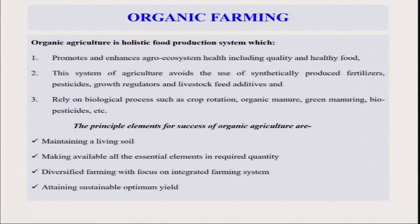Organic farming promotes enhanced agro-ecosystem health including quality and healthy food. It avoids the use of synthetically produced fertilizer, pesticide, growth regulators, and livestock feed additives. The principle of success of organic culture is maintaining a living soil. Our main emphasis in organic farming is not to give food directly to the plant, but to give nutrients to the soil, and make the soil healthy, quality, and fertile so that it can provide all the major and micronutrients needed for plant growth. In most cases, fruits and vegetables under organic farming have very high yield potential — 20 to 30 tons per hectare.